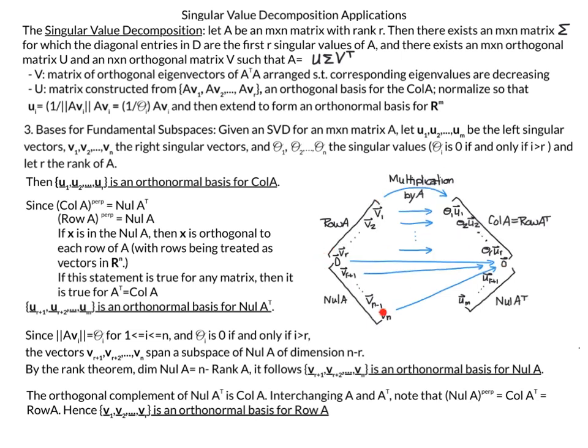And then here on the outside tells us what each of these sets of vectors is a basis for. So V1 through VR is a basis for the row space of A which is what exactly what this part here tells us. The VR plus 1 through VN is the basis for the null space of A which is over here, the result over here.